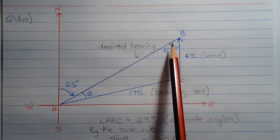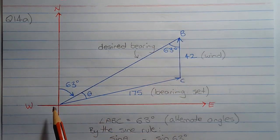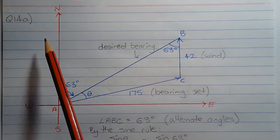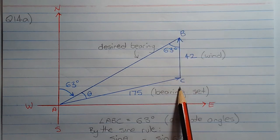So it's convenient to work out angle ABC since it's alternate. You can see a parallel line here and a parallel line here. So CB is parallel to SN.